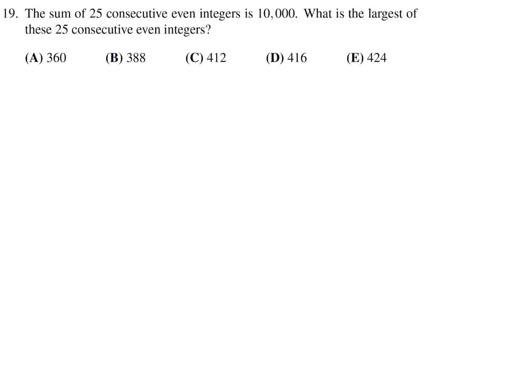The sum of 25 consecutive even integers is 10,000. What is the largest of these 25 consecutive even integers? An even integer is of the form 2n. Consecutive, the next one will be 2n plus 2, 2n plus 4, and so on. We have 25 of them, so eventually we'll get up to 2n plus 48. When we add them all up, there's going to be 25 of them. The sum is 25 times 2n plus the sum of 2 plus 4 plus 6 all the way up until 48.